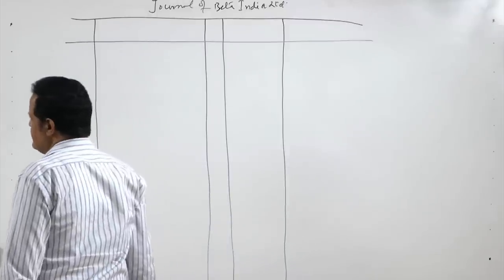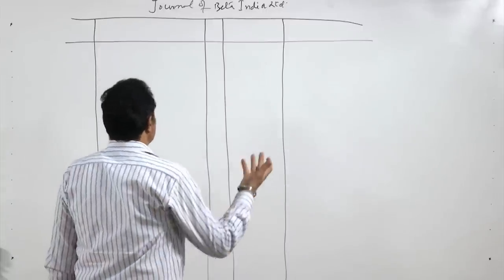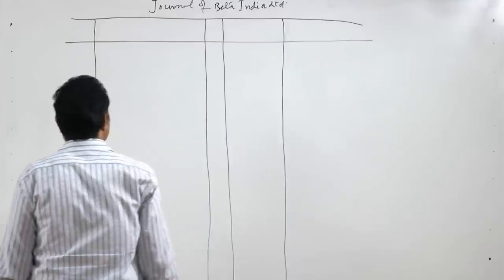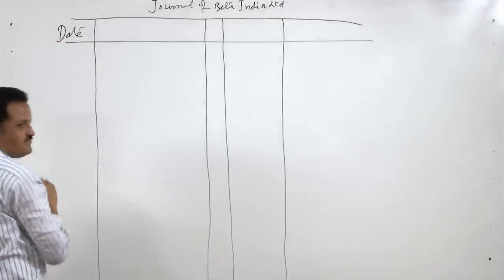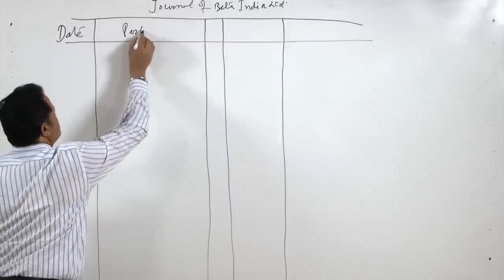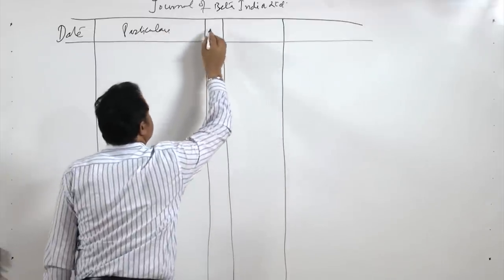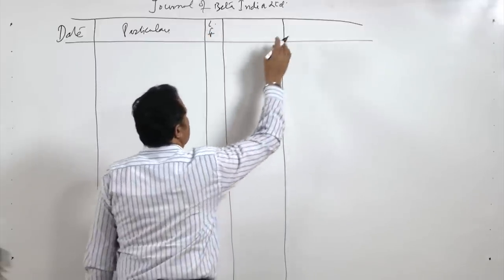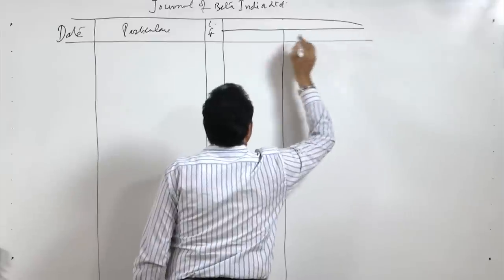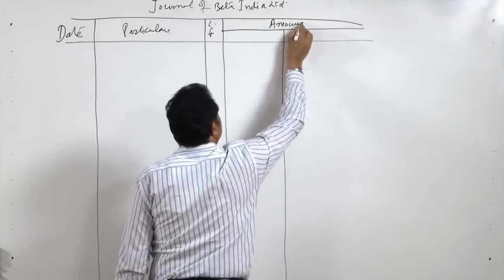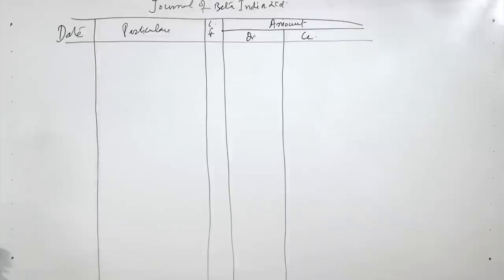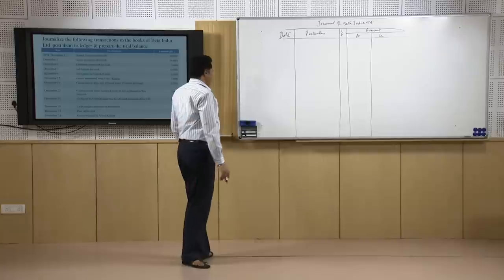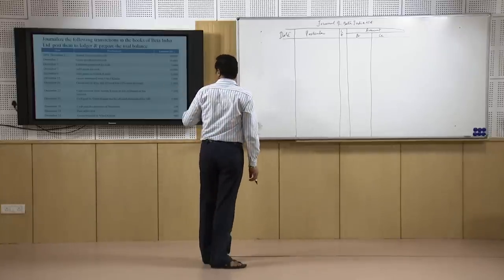This is a journal of Beta India Limited and all these transactions are pertaining to December. So there is no need to write the date or month here on top — simply we have the title 'Journal of Beta India Limited.' Now, the columns are: first column is date, then particulars. This column is called LF — ledger folio — and this column is for the amount. There is a common amount column: one side is for debit and the other for credit. So this is the pro forma of the journal, the first original book of accounts.